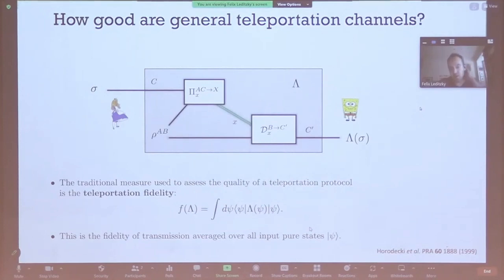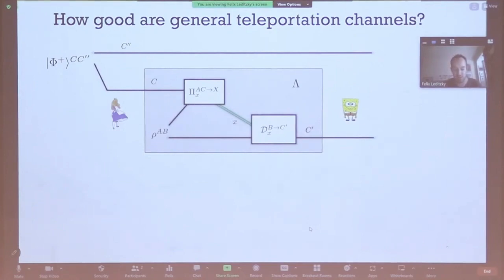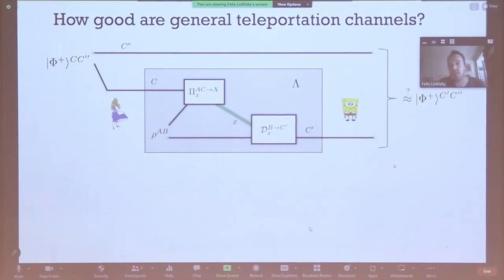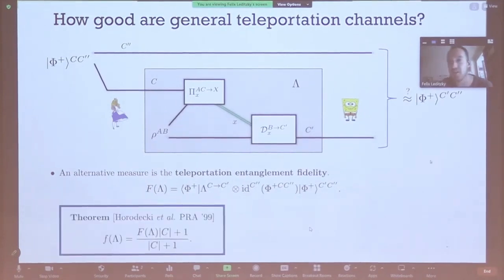There's a different, more static figure of merit where instead you take a maximally entangled state. Alice prepares a maximally entangled state on system C and an auxiliary system C double prime, and then aims to teleport half of that state using the teleportation protocol. The other half, the C double prime system, stays with her the whole time. The channel outputs a system C prime, and you ask how close this is to the maximally entangled state you started with. This is the entanglement fidelity, or teleportation entanglement fidelity.